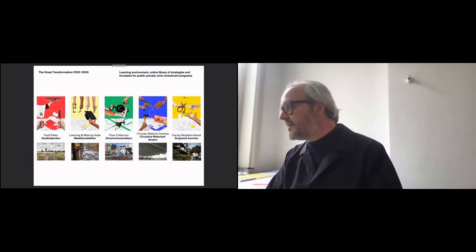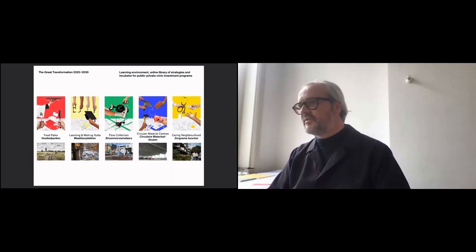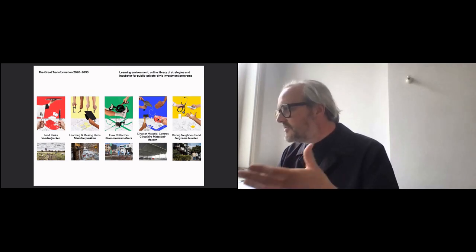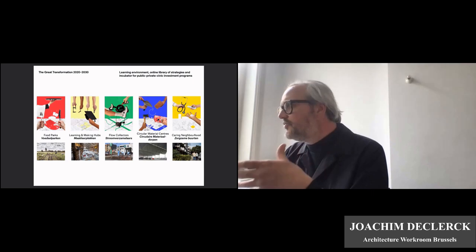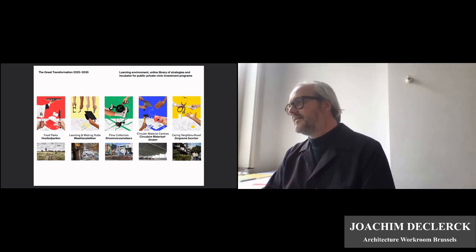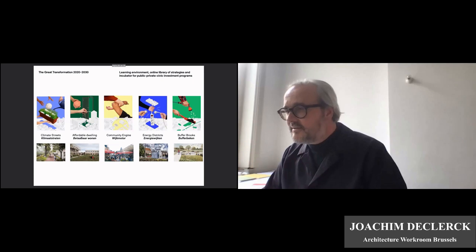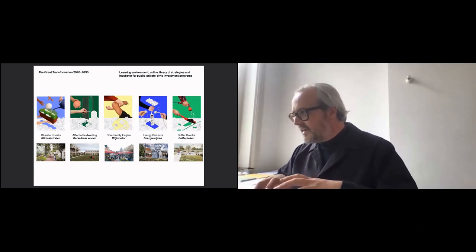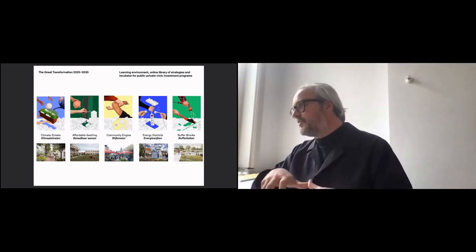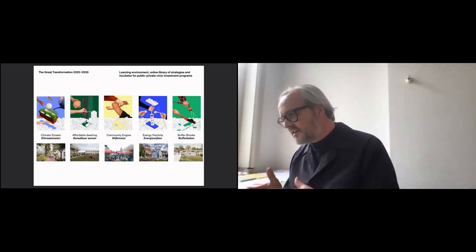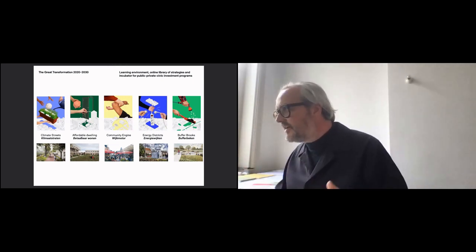We took it one step further. Building on all the knowledge that is there, we said: in fact, we know what we need to realize. The only question is how. We need more food parks for local and biological food production. We need new flow collectors in the mobility system. We need to build climate streets and energy districts. We can start from the other end—from the brief. We can reverse the logic completely, start from what we have to do, and bring everyone together around this.